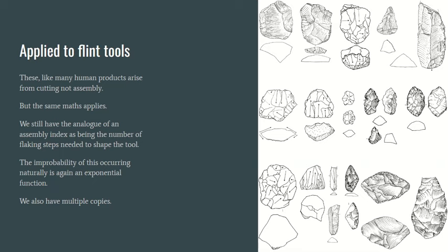We still have the analogue of an assembly index. In this case, it's the number of flaking steps required to shape the tool. And the improbability of this occurring naturally is again going to be an exponential function of the number of steps. And we also find multiple tools characteristic of a given culture. I think this is the Mousterian culture ones I've shown there.